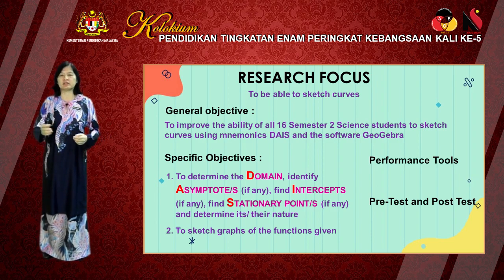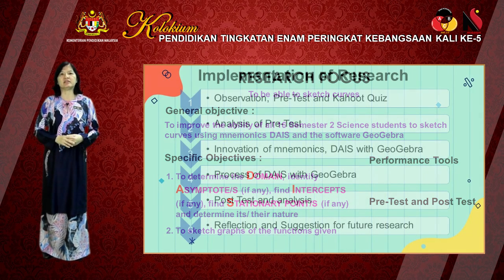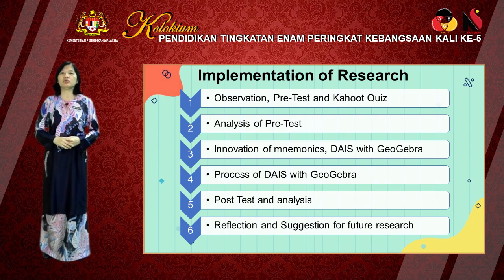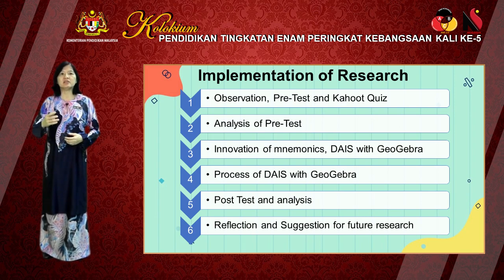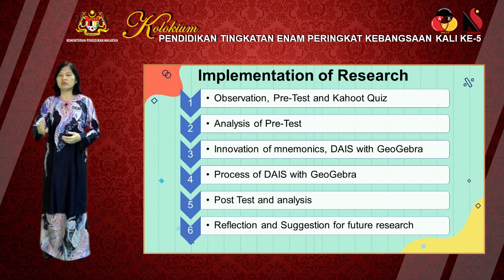Pre-test and post-test were the instruments used to measure the efficiency of both specific objectives. Next is the implementation of research consisting of 6 steps: firstly, observation, pre-test, and Kahoot quiz; followed by the analysis of the pre-test; then the innovation of the mnemonic TASTE with GeoGebra; then the process of using TASTE with GeoGebra; then the post-test and its analysis; and finally, reflection and suggestions for future research.